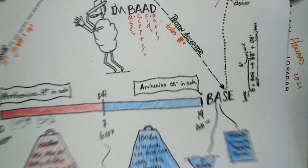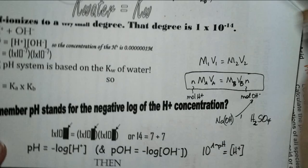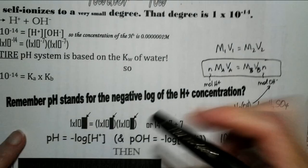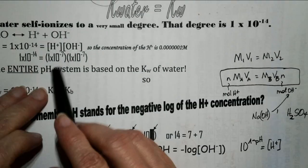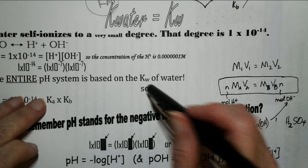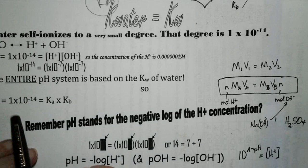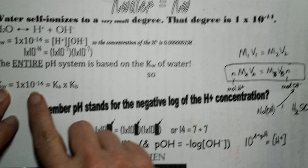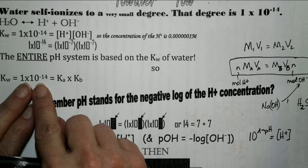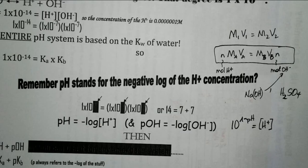The entire pH system is based on the Kw of water. The Kw of water is 1×10⁻¹⁴, and that's equal to Ka times Kb. So always within your system, if you multiply Ka times Kb, it should equal 1×10⁻¹⁴ — that's a way to check yourself.